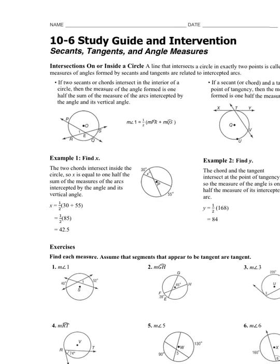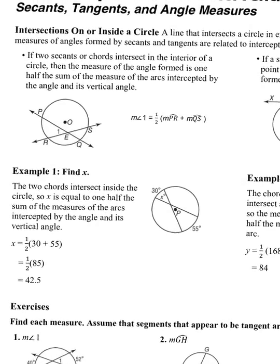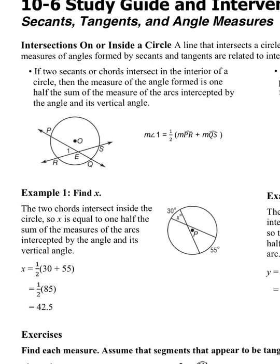There are two theorems we're going to work on today. The first theorem is: if two secants or chords intersect in the interior of a circle, then the measure of the angle formed is one half the sum of the measure of the arcs intercepted by the angle and its vertical angle. It sounds kind of wordy, but I promise you it's not that bad.